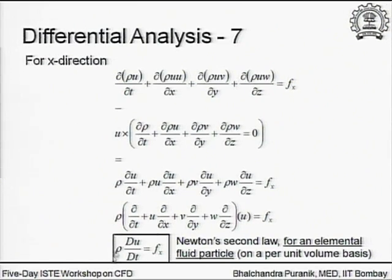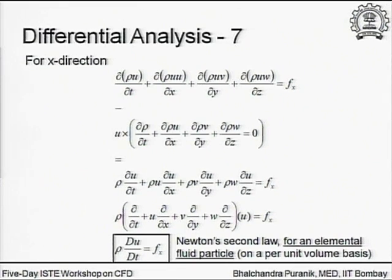We obtained the non-conservative form, which if you multiply both sides by delta V — the volume of a fluid particle — can be interpreted as F = ma applied to a fluid particle, which is Newton's second law of motion.